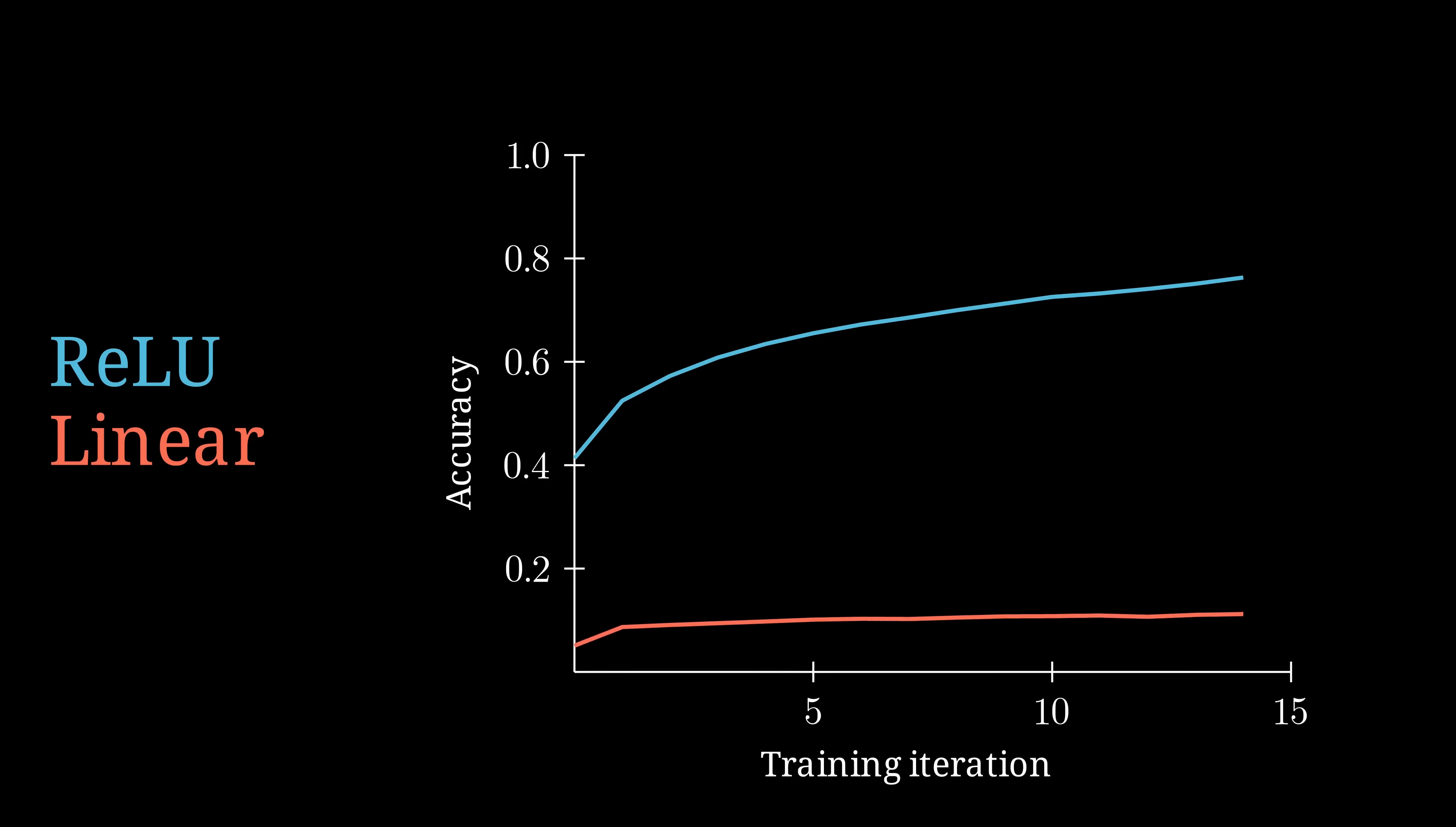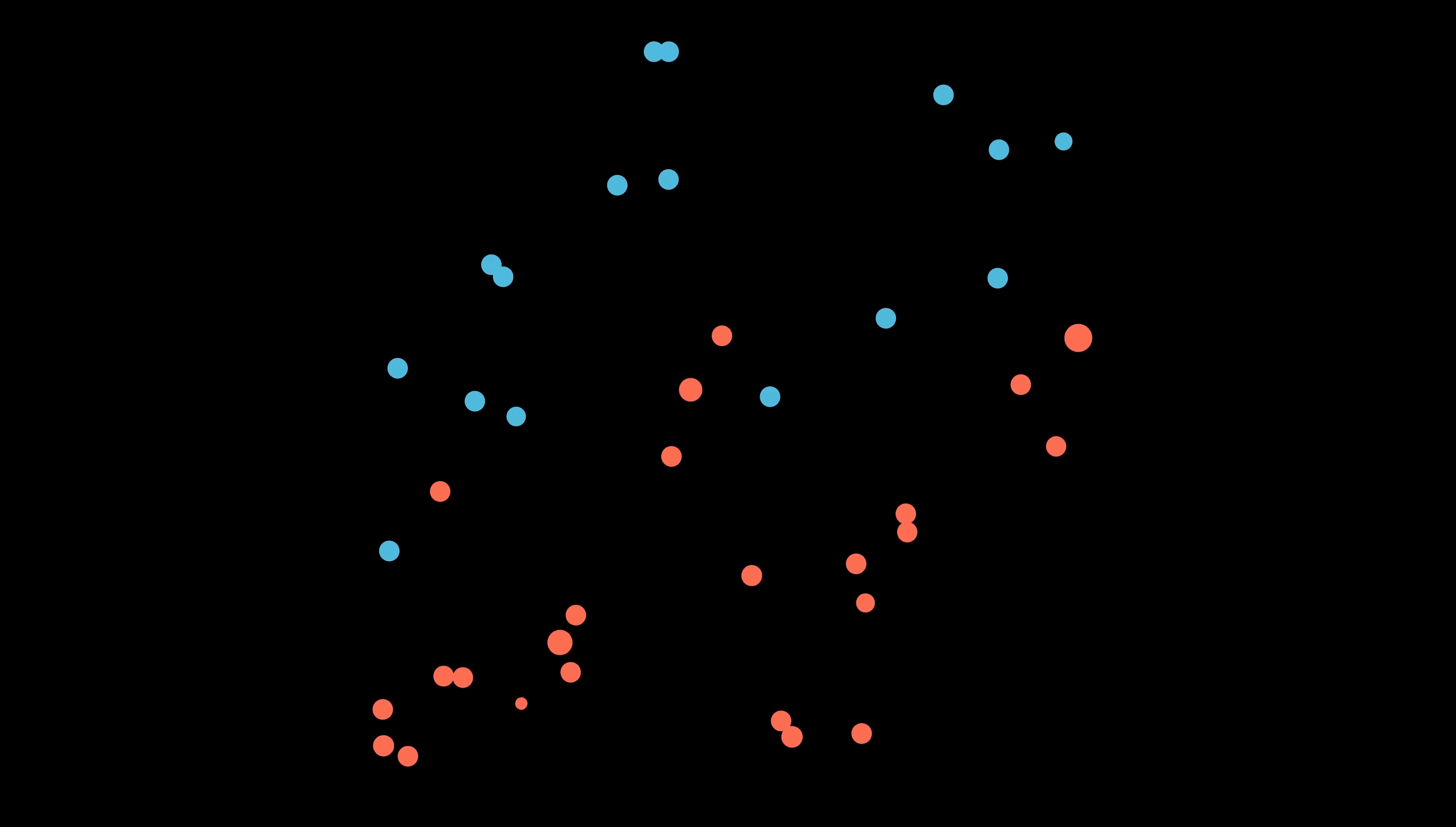Well, saying the model cannot learn at all is a bit of an exaggeration. It is still trying to fit a linear function to the training data as well as possible. But it just will never converge to the real function.